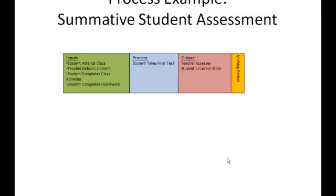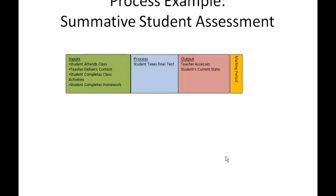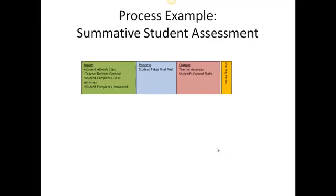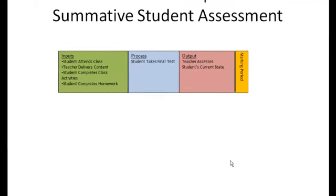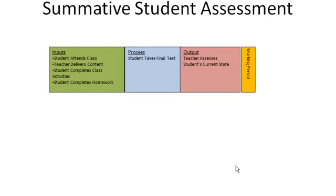So we're going to begin with inputs. So we start off with, here are the inputs when we're looking at summative student assessment. Again, summative student assessment is when we are testing students at a given point in time to try to obtain data sets in terms of what their current state is. So what happens in this particular process is that a student attends class and a teacher delivers content. Now, if this were a flipped classroom, those two steps would be interchanged where a teacher could deliver the content prior to the class and then the student attends the class. In the class, the student completes class activities and then following the class, there's homework.